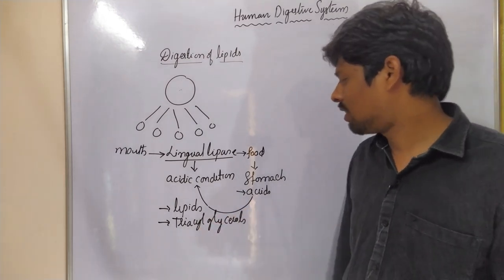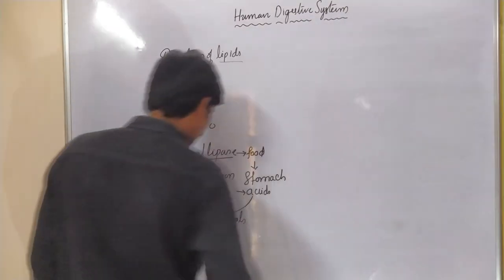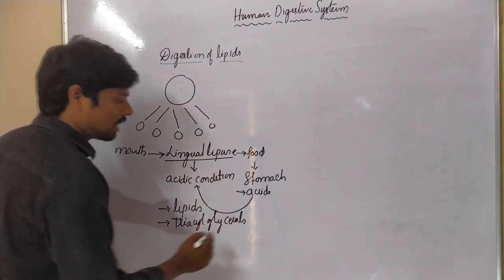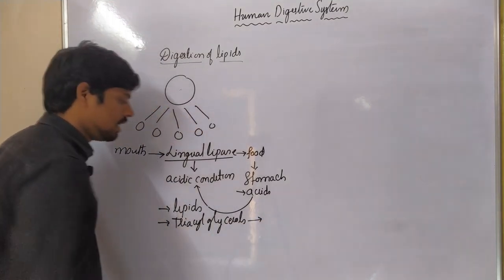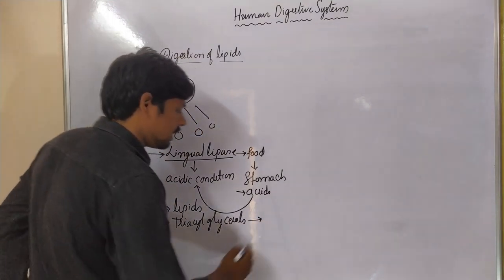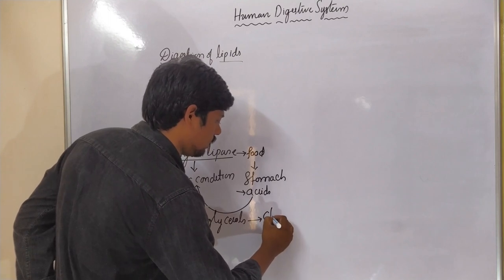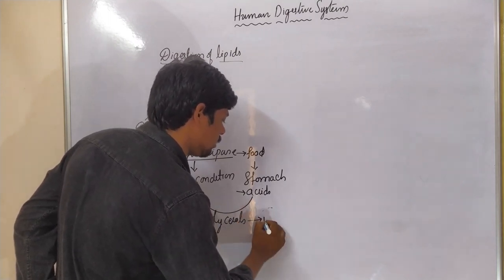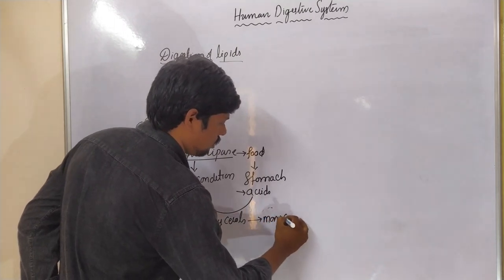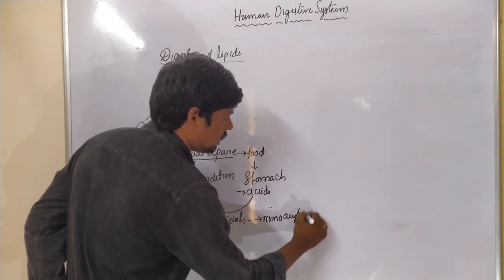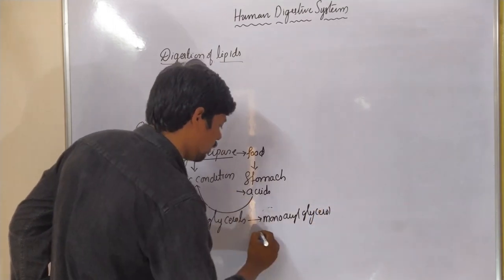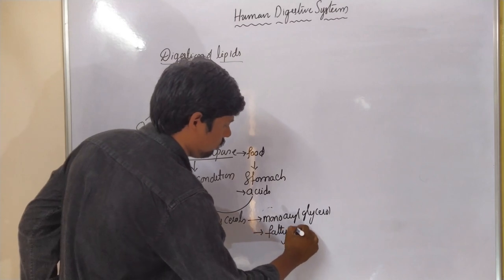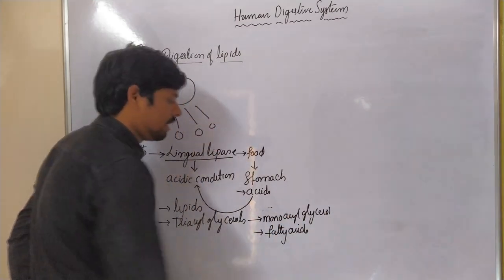Lingual lipase acts on triacylglycerol in the stomach. The products of this reaction are monoacylglycerol and fatty acids.